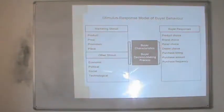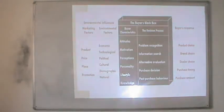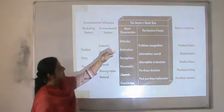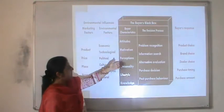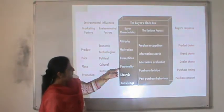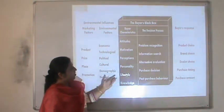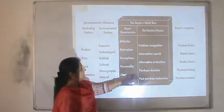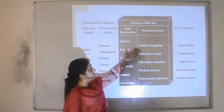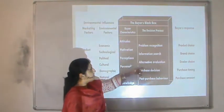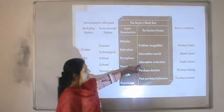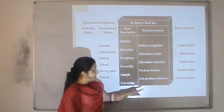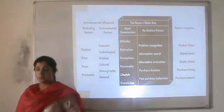The most important characteristics of a buyer include attitude, motivation, perception, personality, lifestyle and knowledge. On the other hand, the decision-making section covers the typical five-stage process beginning from need identification, information search, evaluation of alternatives, purchase decision and post-purchase behavior.